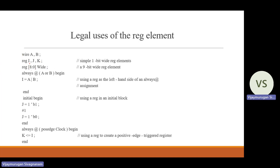Legal uses of the register element: the first one is reg i, j, k — these three variables are register variables taking one-bit values. Next, reg [8:0] y — here y is a nine-bit register variable, so this register variable can store nine-bit values.